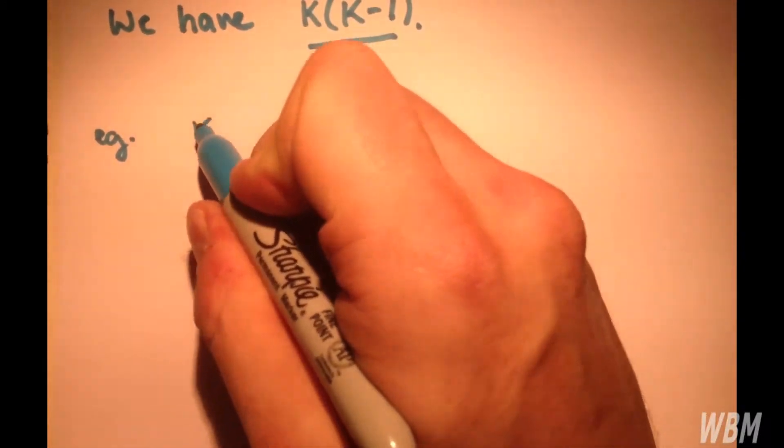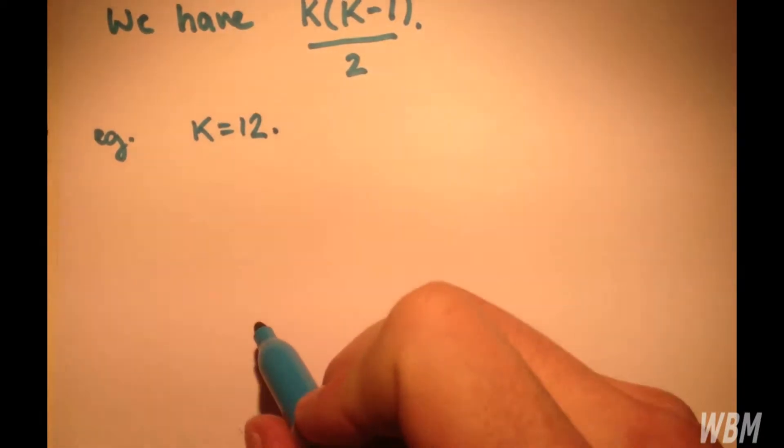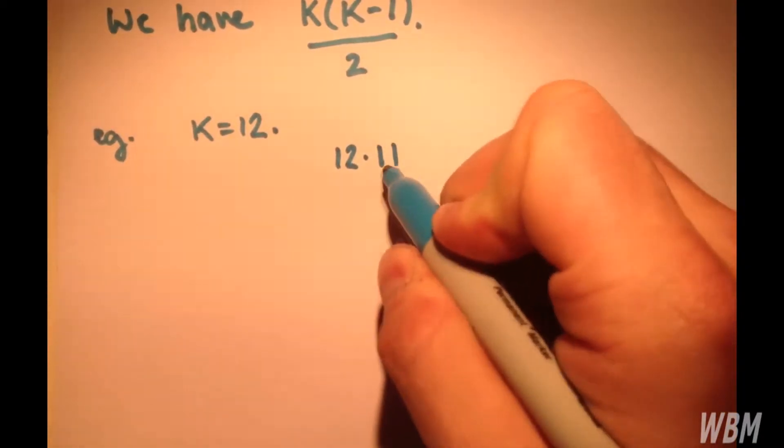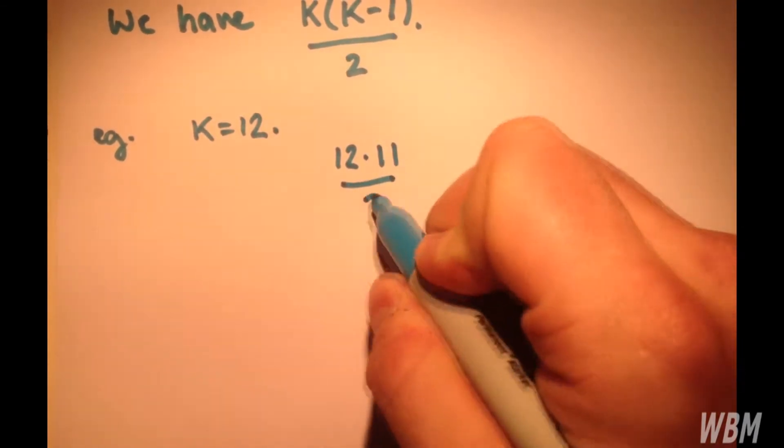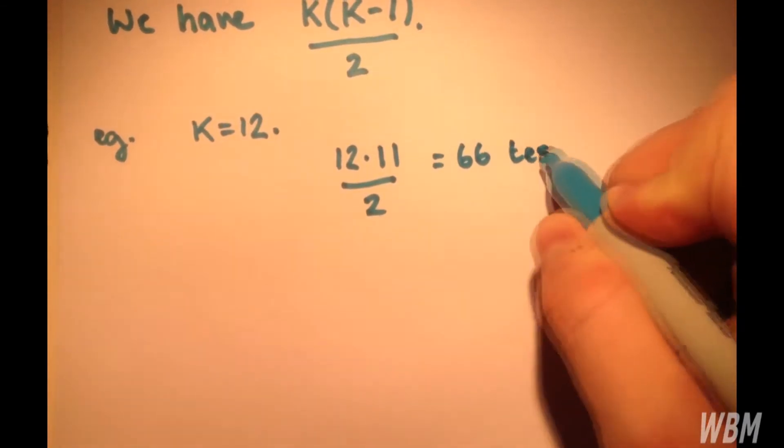say we have 12, so we have 12 means to test, then this means we have to do 12 by 11 over 2, which is 66 tests to do.